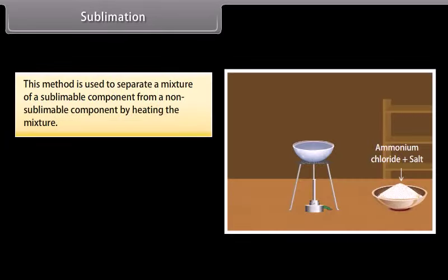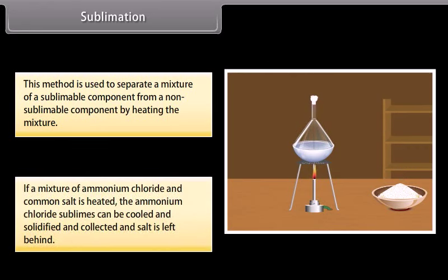Sublimation. This method is used to separate a mixture of sublimable component from a non-sublimable component by heating the mixture. If a mixture of ammonium chloride and common salt is heated, the ammonium chloride sublimes, can be cooled and solidified and collected, and salt is left behind.